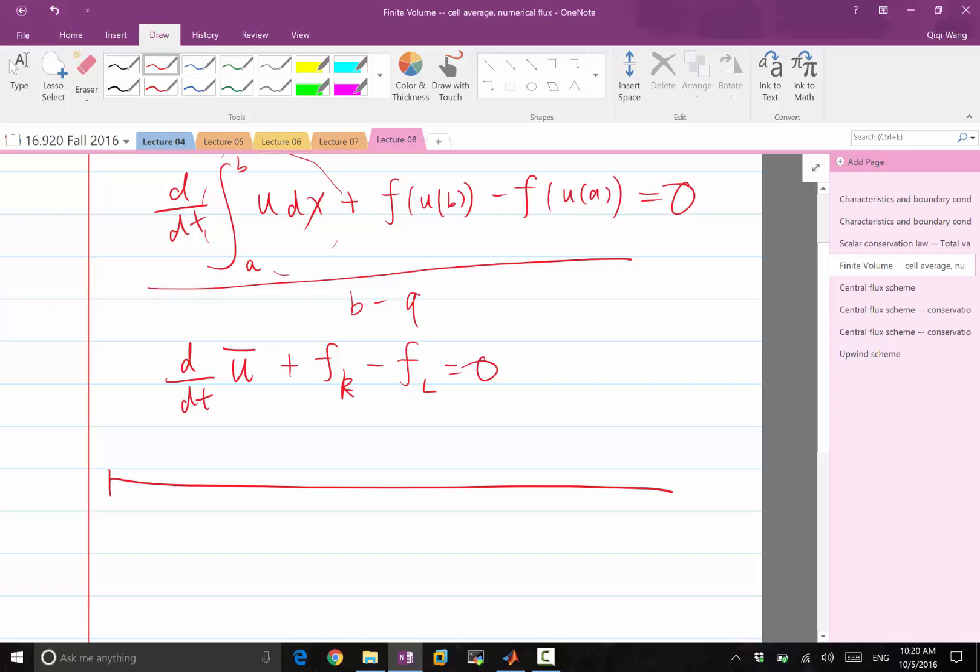Over b minus a. Okay, so apply this in a domain discretized in small intervals. Delta x, 2 delta x, 3 delta x, and this is n delta x.